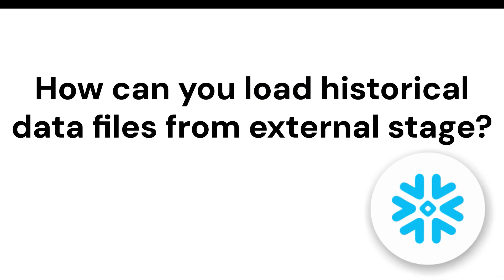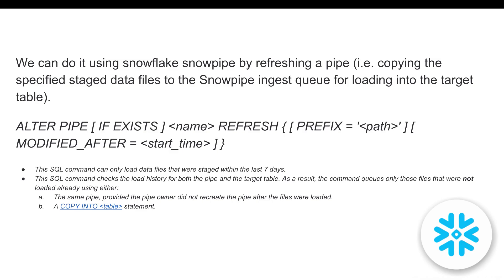The next question is: how can you load historical data files from an external stage? For example, if you have data files from one week back, you can load them using the ALTER PIPE REFRESH command. You specify your pipe and define the time period from which you want to start copying data, and Snowpipe loads all those files into the target table.